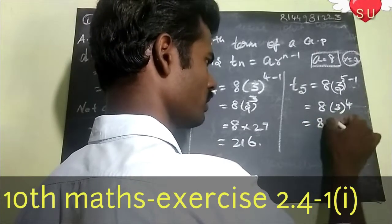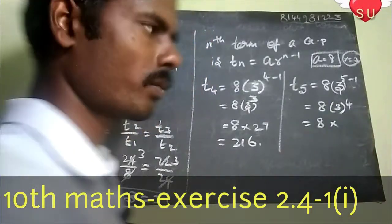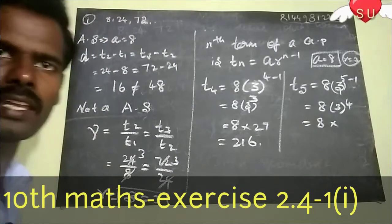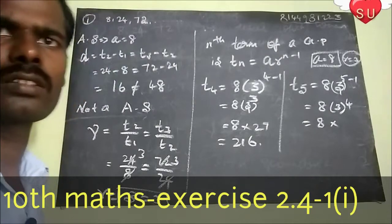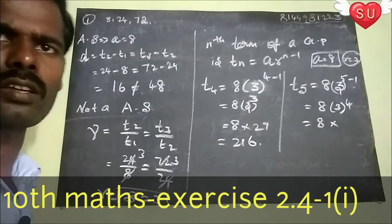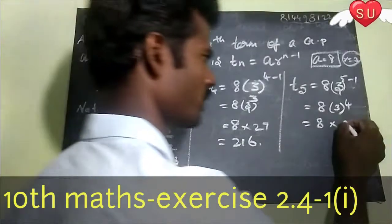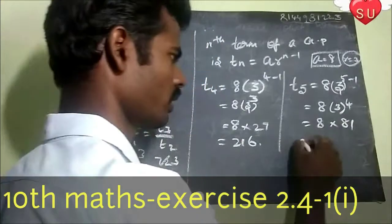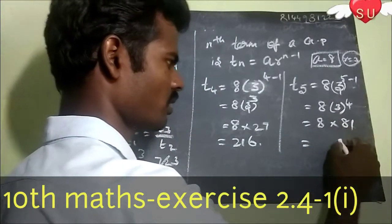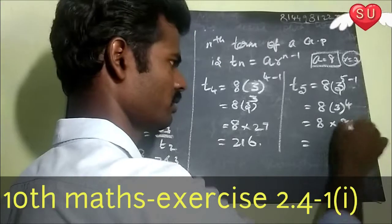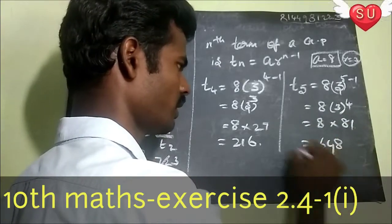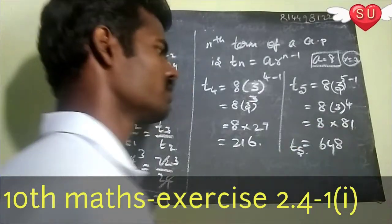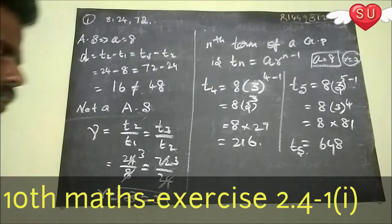For T5, we calculate 8 into 3 to the power 4. 3 times 3 is 9, 9 times 3 is 27, 27 times 3 is 81. So 8 into 81 gives T5 equals 648.